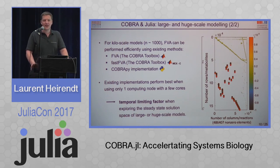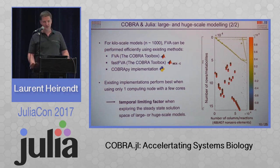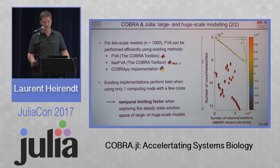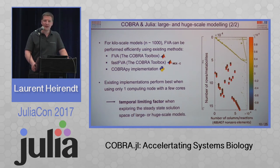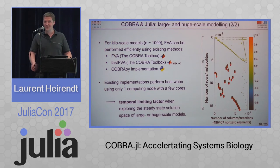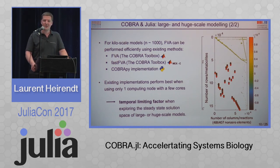For small models — say 1,000 reactions, what we call kilo-scale — these can be efficiently solved, and we're not focusing on speed gain because it's on the order of seconds or minutes. They can be solved today with the COBRA Toolbox or CobraPy, a Python implementation. But when going to very large scale, you hit a temporary limiting factor. When I joined the LCSB about a year ago, we performed FVA analyses on large models on the order of 15 to 20 days. Today we can solve it faster — you can see here the stoichiometric matrix of a prototype human body model.